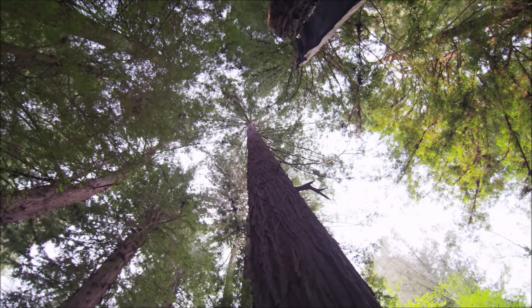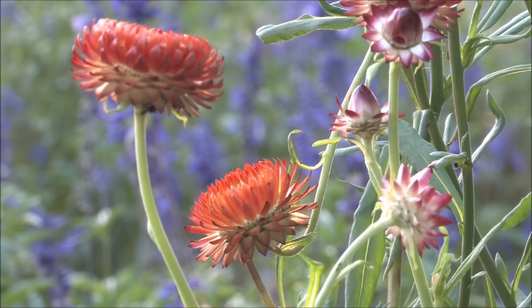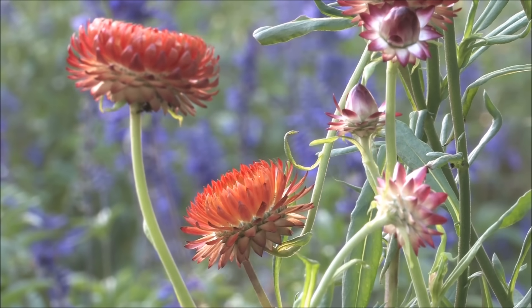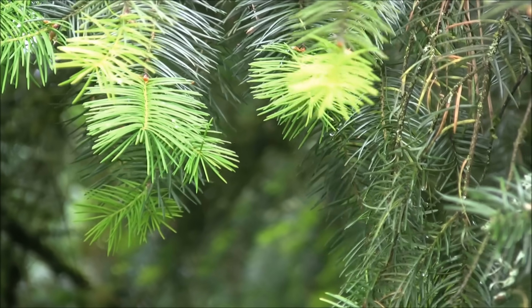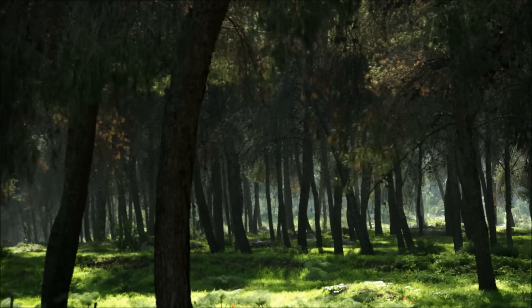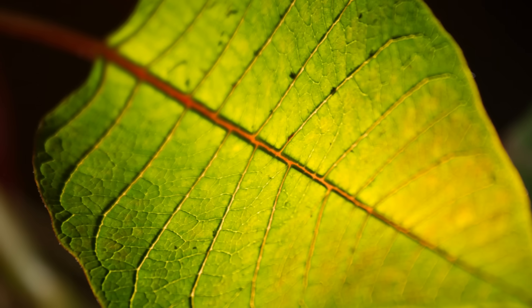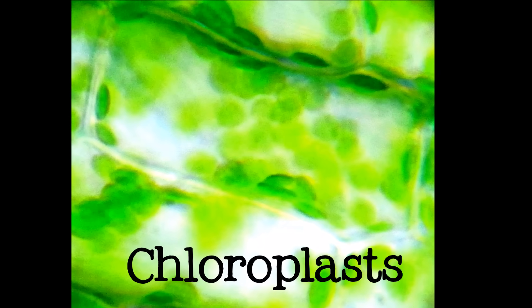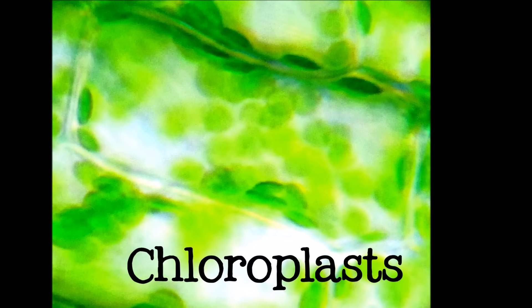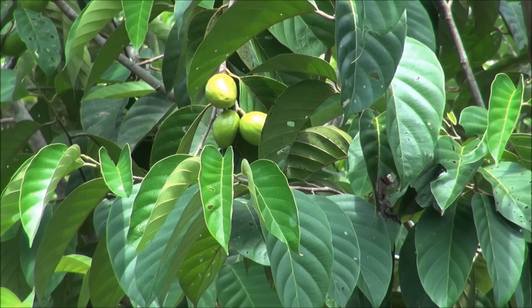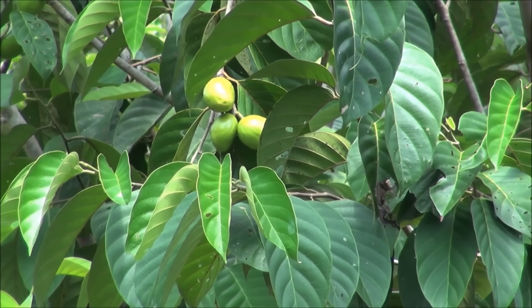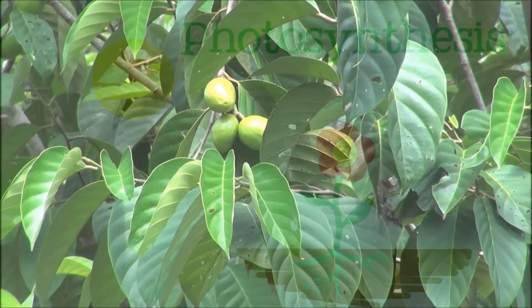Without cell walls, tall trees, cactus, and even little flowers would not be able to stand up. Many plants are easy to recognize by their green leaves. In fact, most plants are green, or have green parts. This green color is caused by another special part of their cells, called chloroplasts. Chloroplasts contain chlorophyll, which is green. Chlorophyll is what allows plants to carry out photosynthesis and make food from the sun's energy.